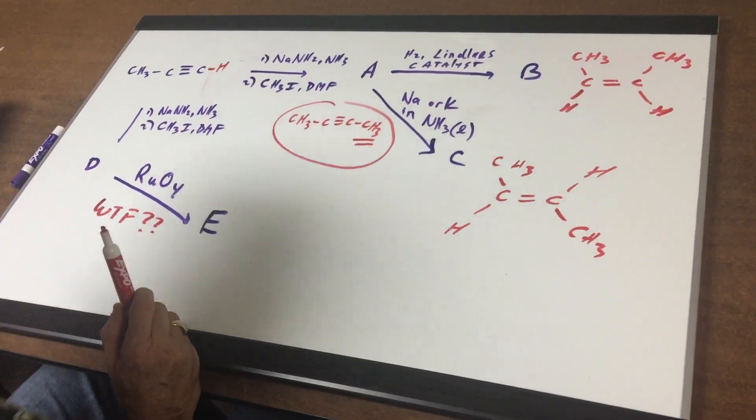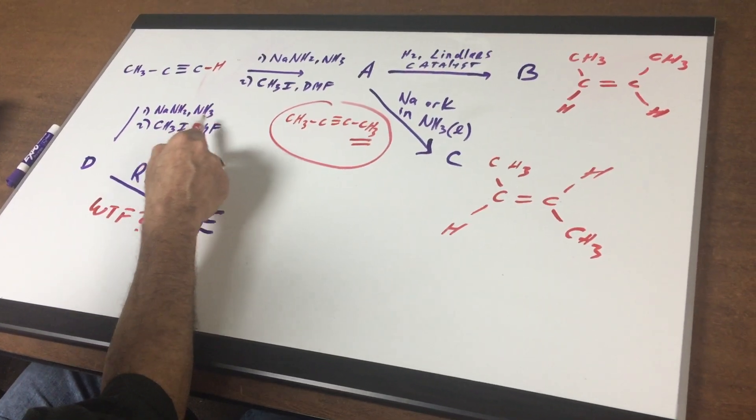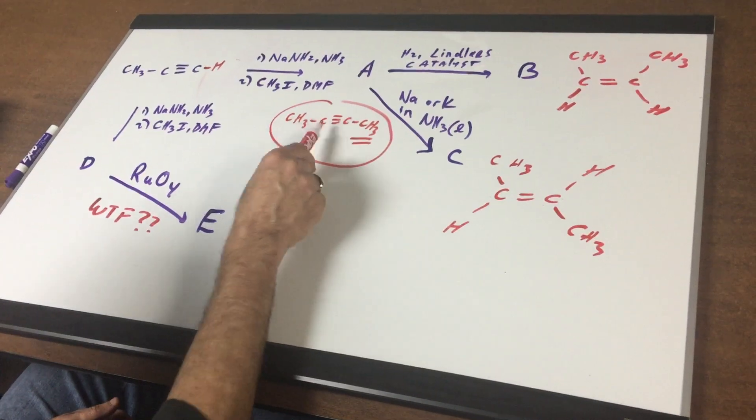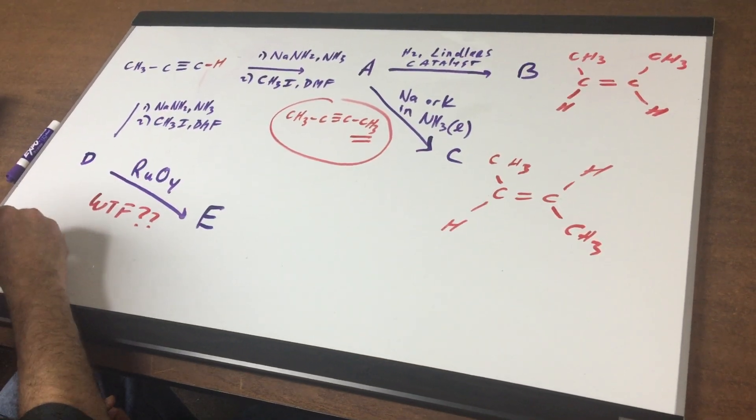The last part. NaNH2 again ammonia CH3Br DMF gives you the same compound. So letter D is the same thing as we just did. So let's write it here.